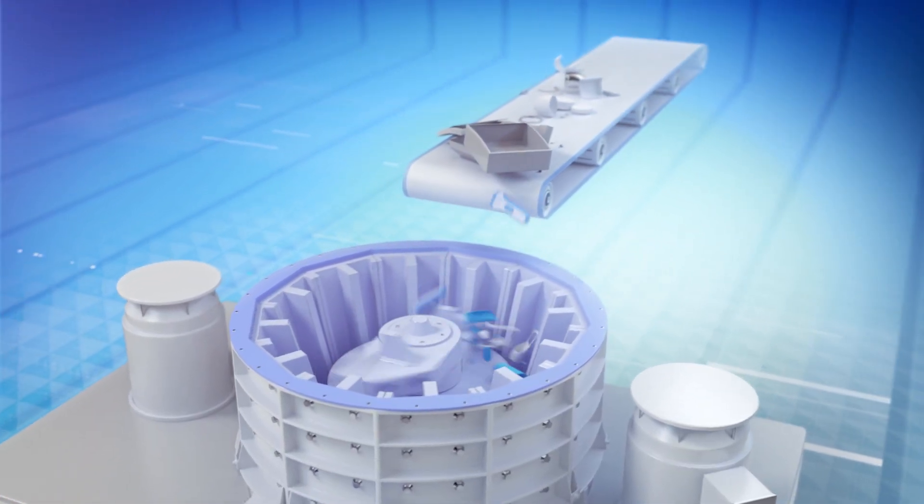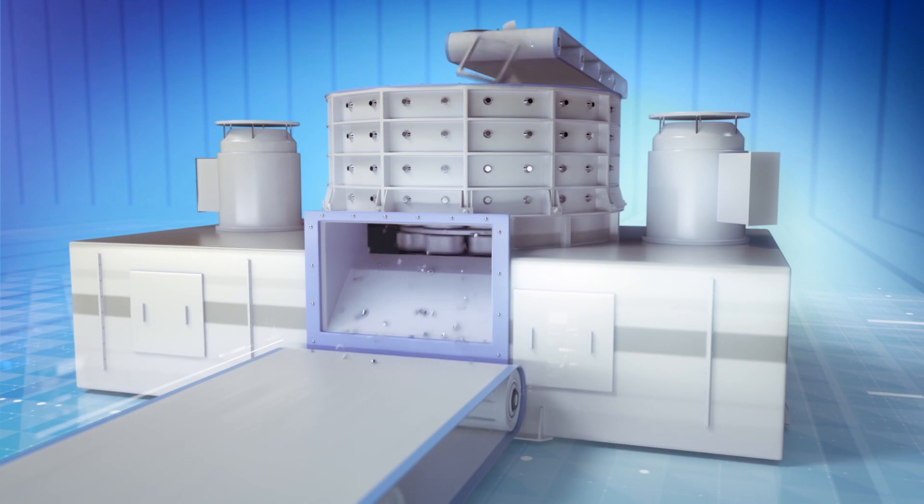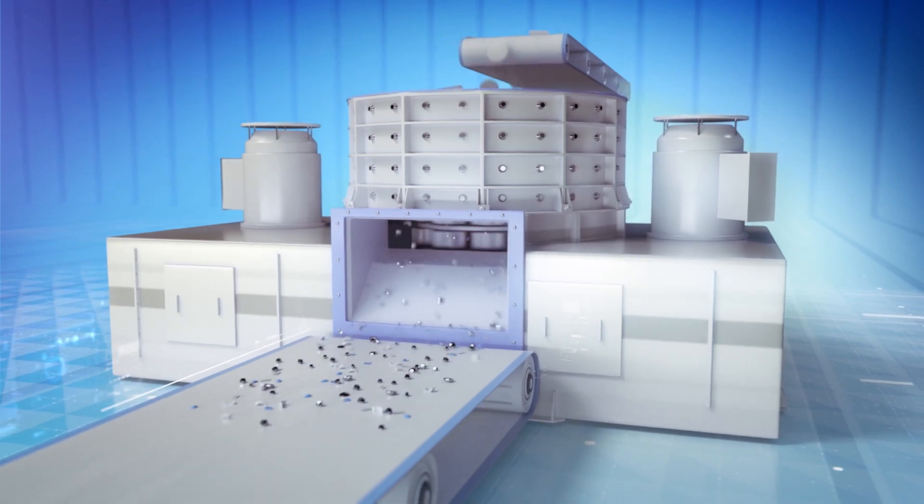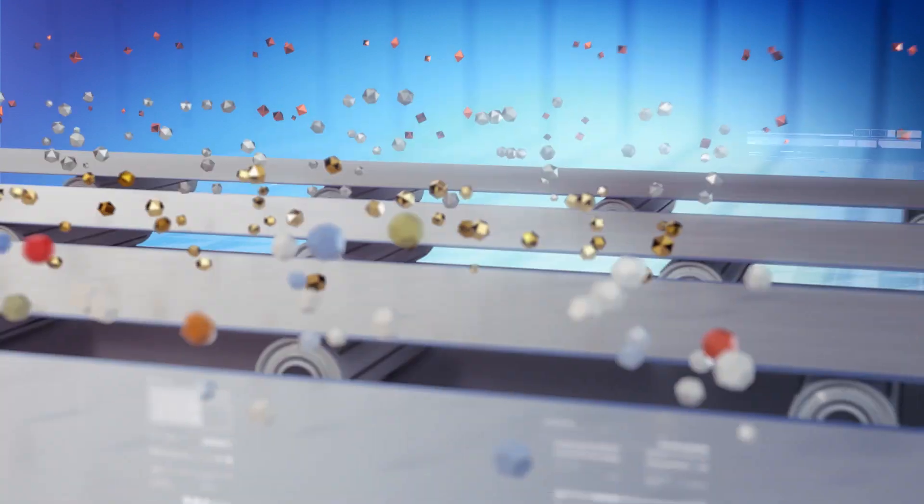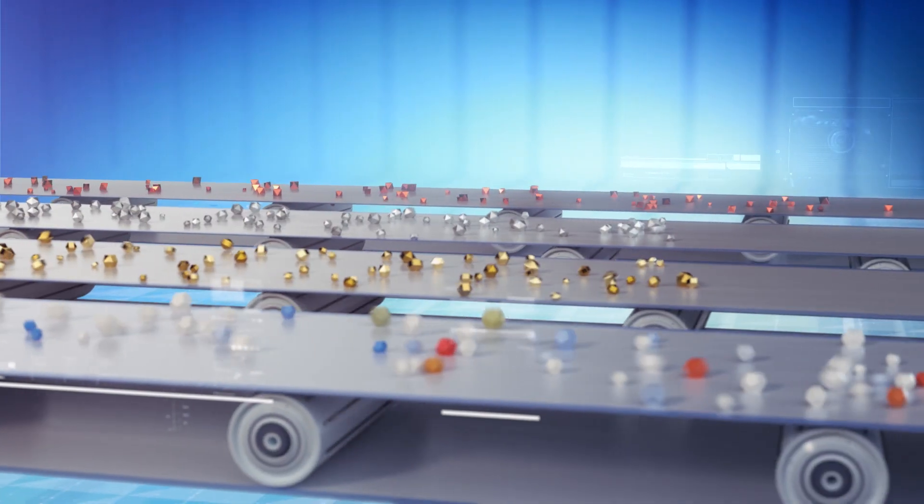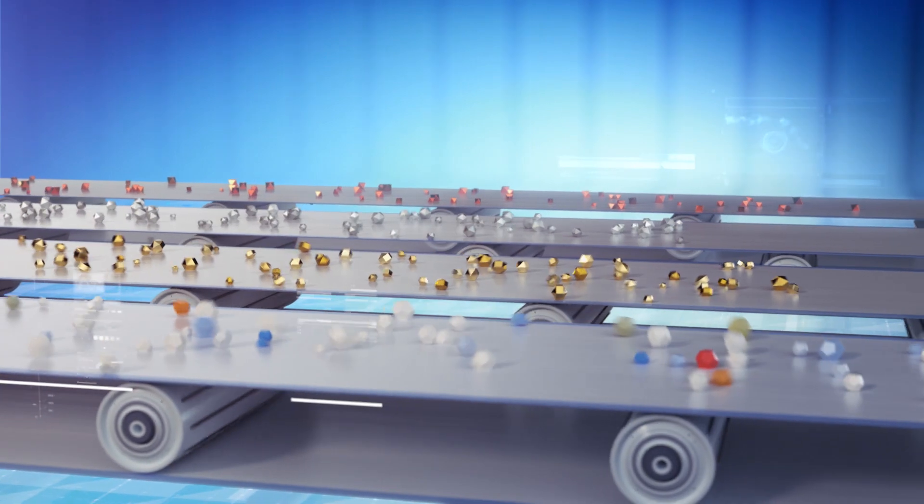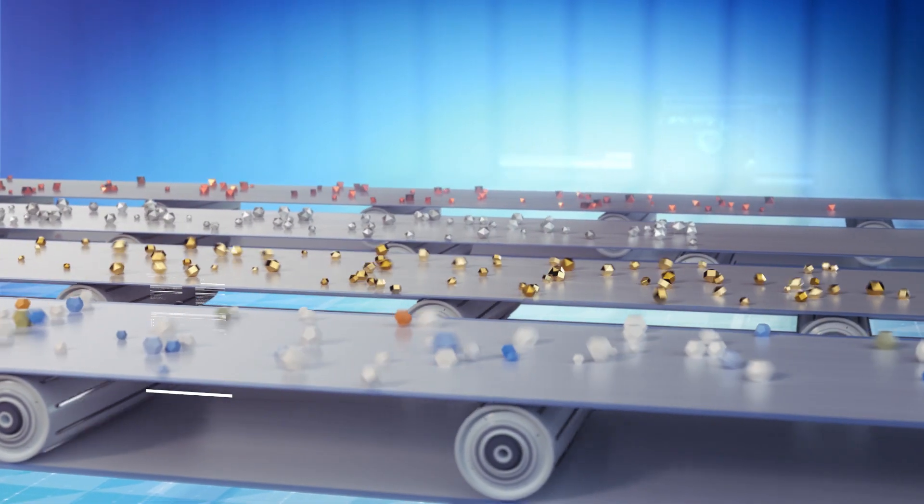These decontaminated electronics are then ground up in a mill and the material is efficiently separated by a series of automatic processes, including wet tables. By this process, we extract metals such as copper, aluminum and gold, as well as plastics that can be used again.